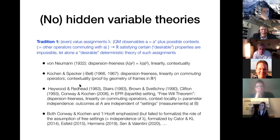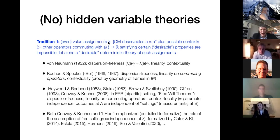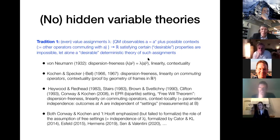The Free Will Theorem excludes value assignments that are dispersion-free and linear on commuting operators, but the non-contextuality condition is weakened to local contextuality: the value of observable A in assignment λ is allowed to depend on operators nearby. This is all done in the EPR or bipartite setting — Alice and Bob — where the value of A may depend on other operators commuting with A at Alice's side, but not on operators at Bob's side far away.